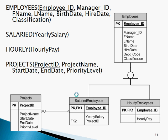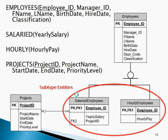Now we can determine the themes that these attributes fit in. Notice that we now have four different entities: employees, projects, and salaried and hourly as subtype entities of employees. Subtype entities automatically inherit the parent's or supertype's attributes, so we only need to place the unique attributes for each entity in the subtype. Therefore, salaried employees automatically inherit manager ID, first name, last name, birth date, hire date, etc. However, they have two unique attributes: yearly salary and project ID. Hourly employees have one unique attribute: hourly pay. Projects becomes another entity and there is a relationship between projects and salaried employees.